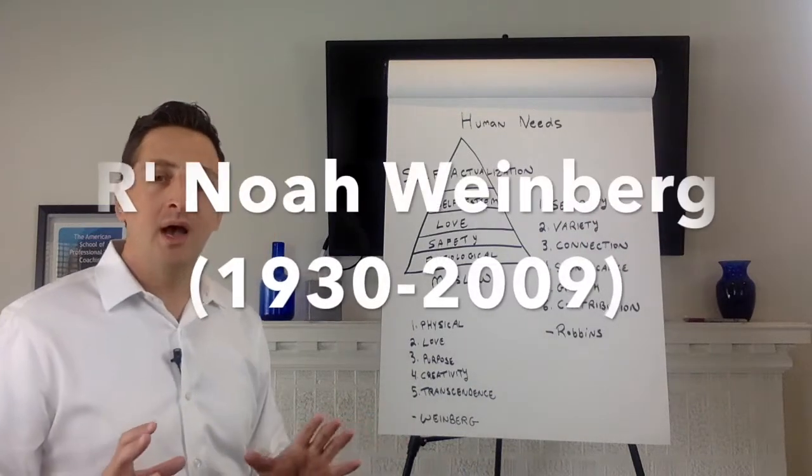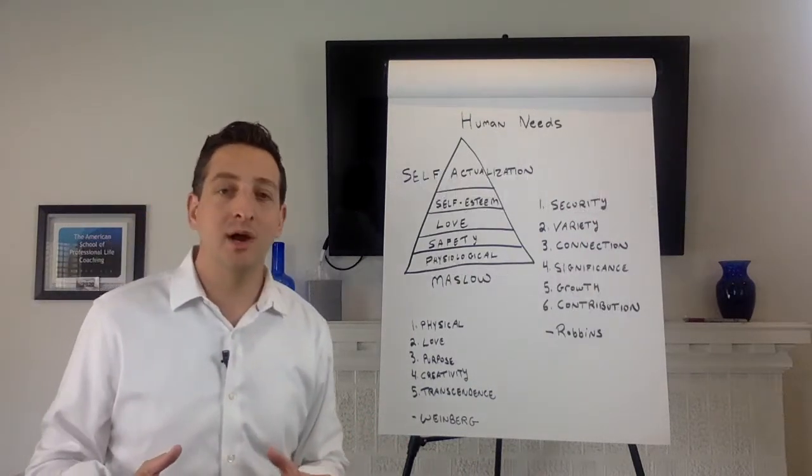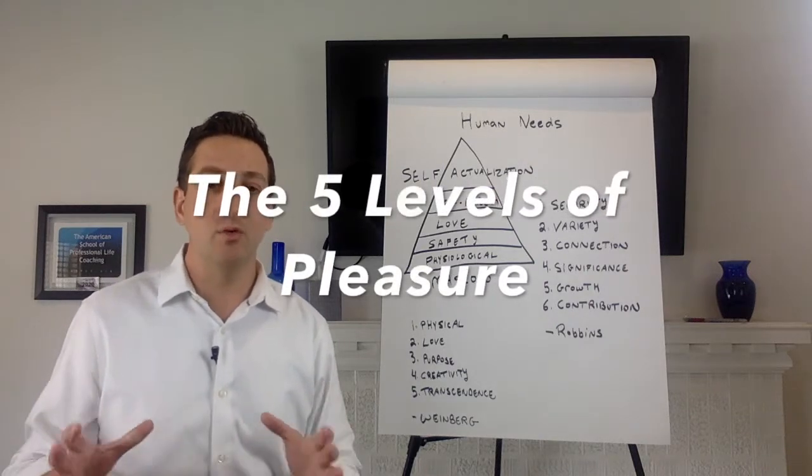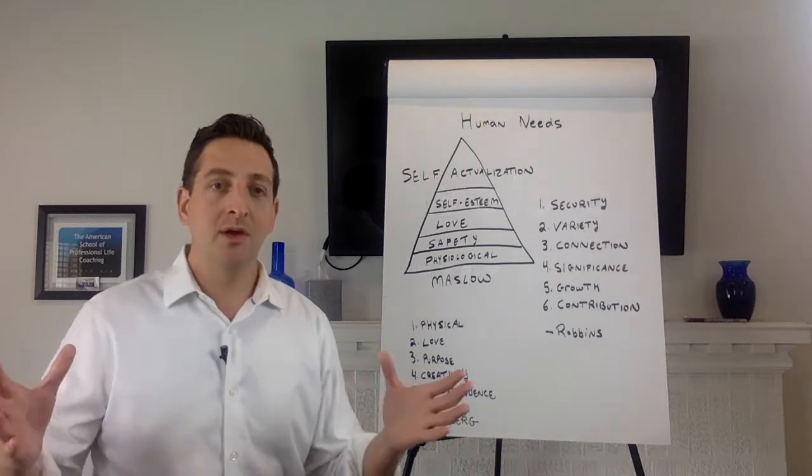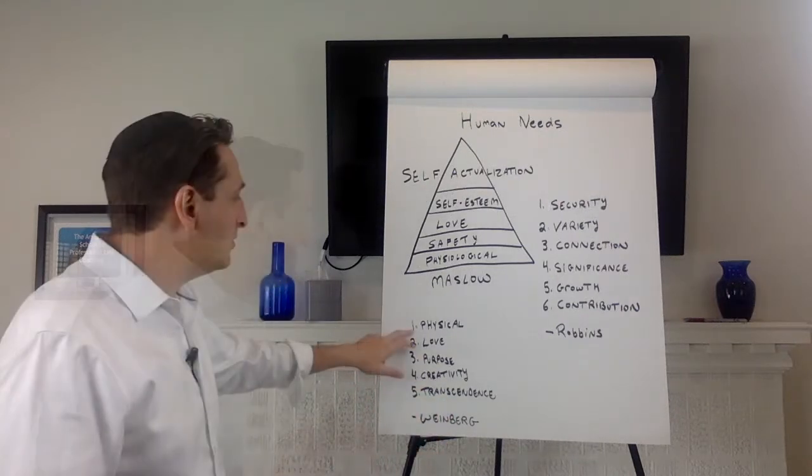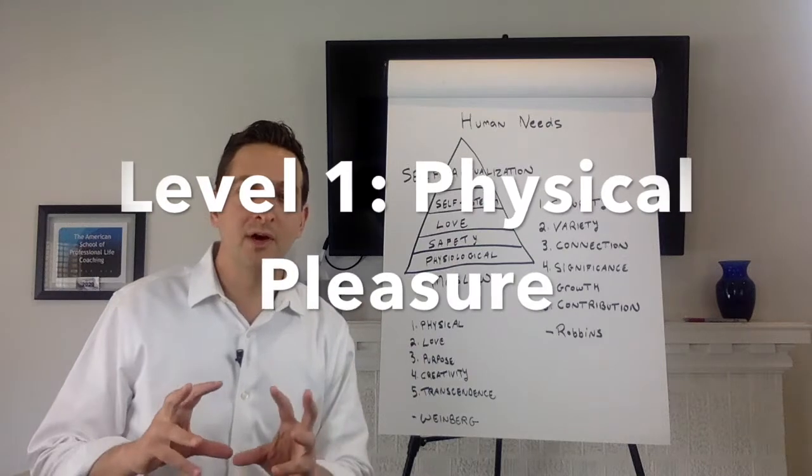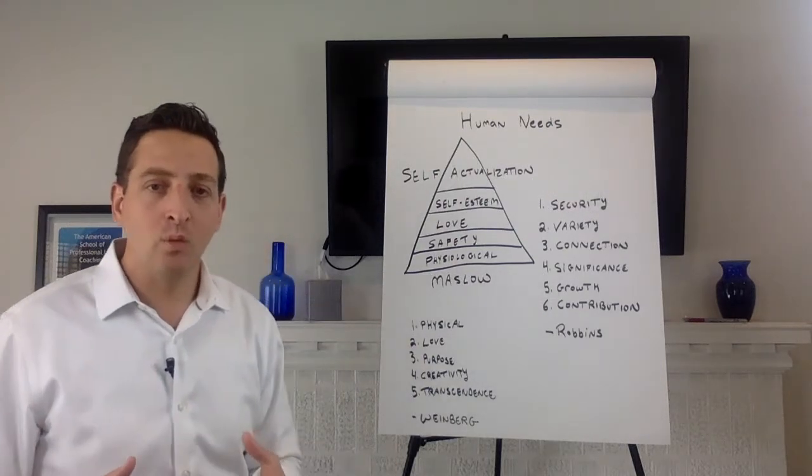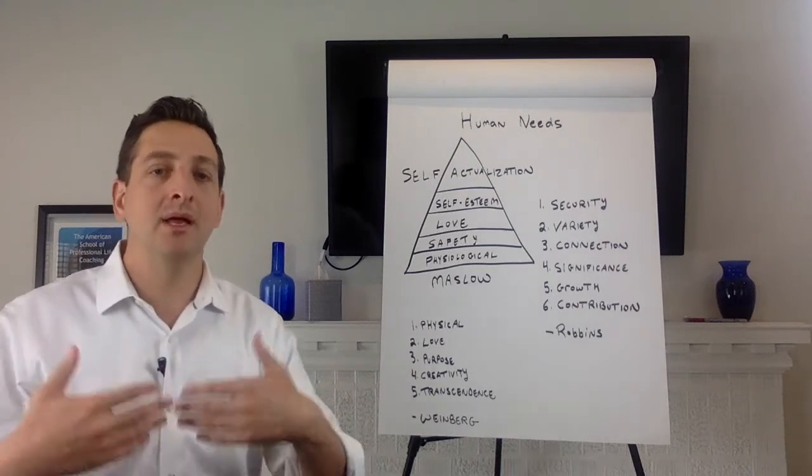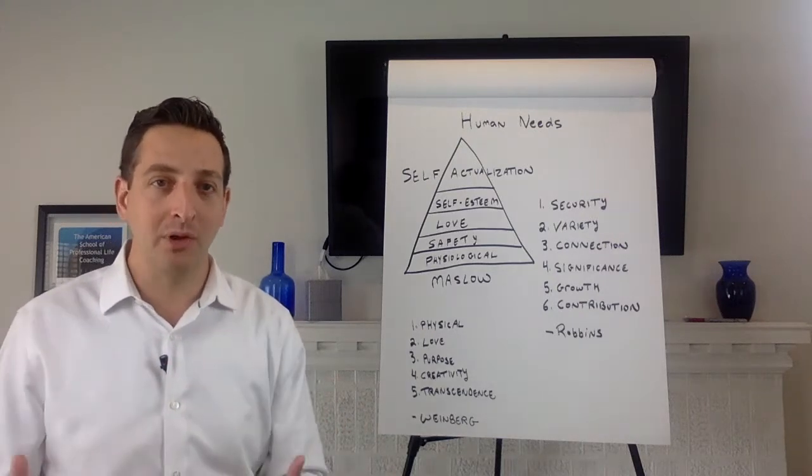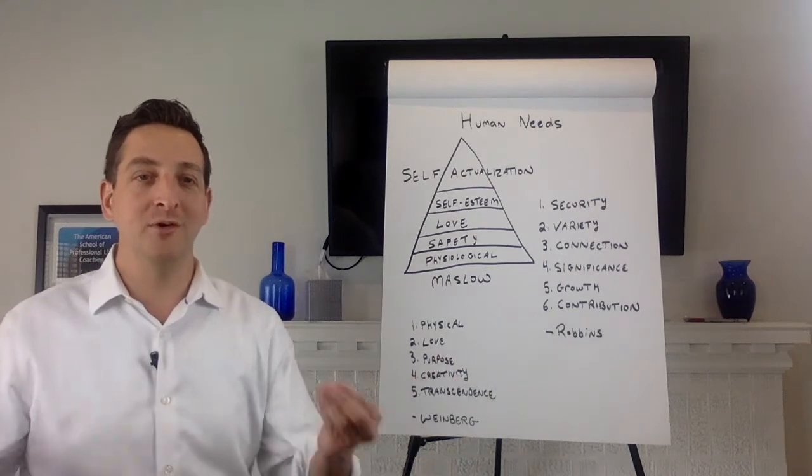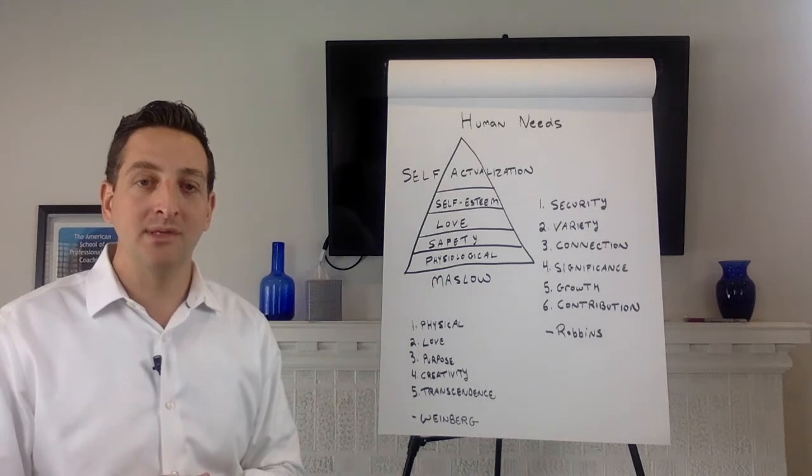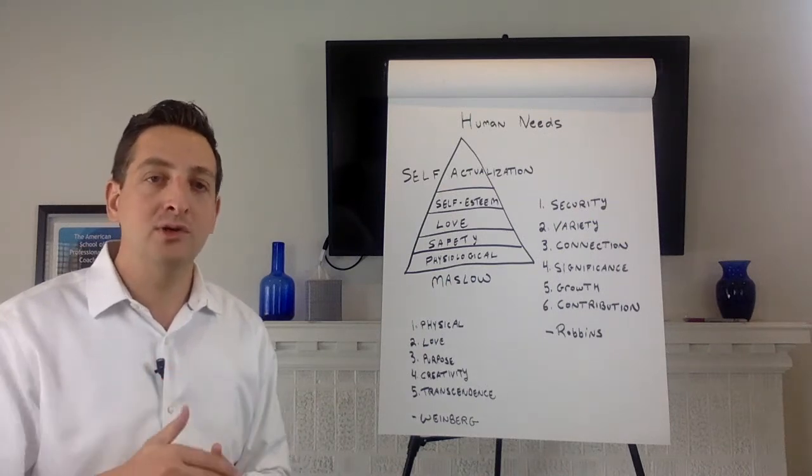Now finally we have Weinberg, which is a system many people have not heard about, but I think it's great. It's called the five levels of pleasure. He wrote a book about it you can pick up on Amazon called The Five Levels of Pleasure. We start with your physical needs, figuring out how much of this we have. What he found is that a lot of people are spending a lot of time seeking physical pleasure but not being really happy.